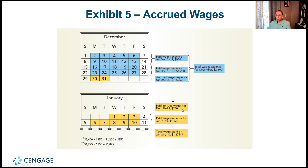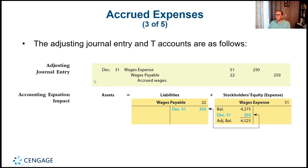The adjusting entry debits wages expense and credits wages payable for $250 — it's December 31st, confirming it's an adjusting entry. On the accounting equation: under liabilities, wages payable increases by $250; wages expense — which negatively impacts stockholders' equity — is debited for $250, increasing our wage expense.